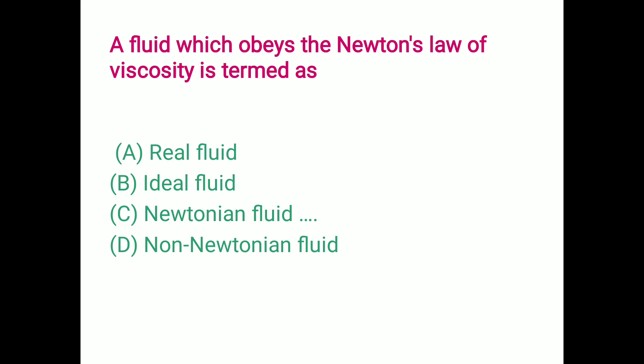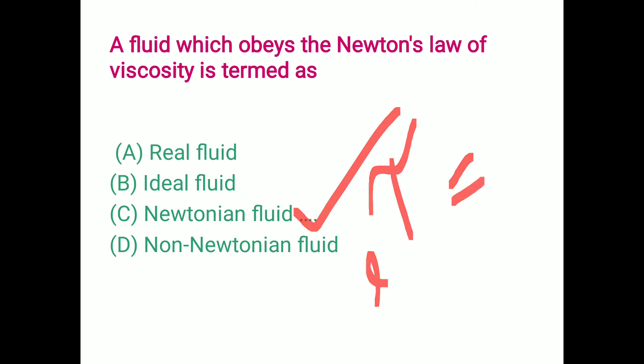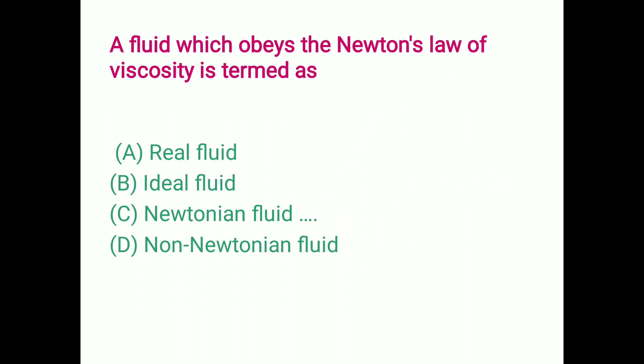A fluid which obeys Newton's law of viscosity is termed a Newtonian fluid. We have two types: Newtonian fluids (such as water and air) and non-Newtonian fluids (such as rheopectic, Bingham plastic). Newton's law of viscosity is expressed as tau = mu × (du/dy), meaning shear stress equals viscosity multiplied by the velocity gradient. Option C is the correct answer.